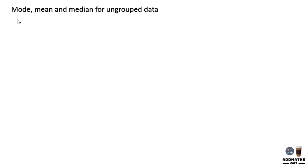Mode, mean and median for ungrouped data. So for ungrouped data, the way you find mode is very simple. To find mode, it is the highest frequency.